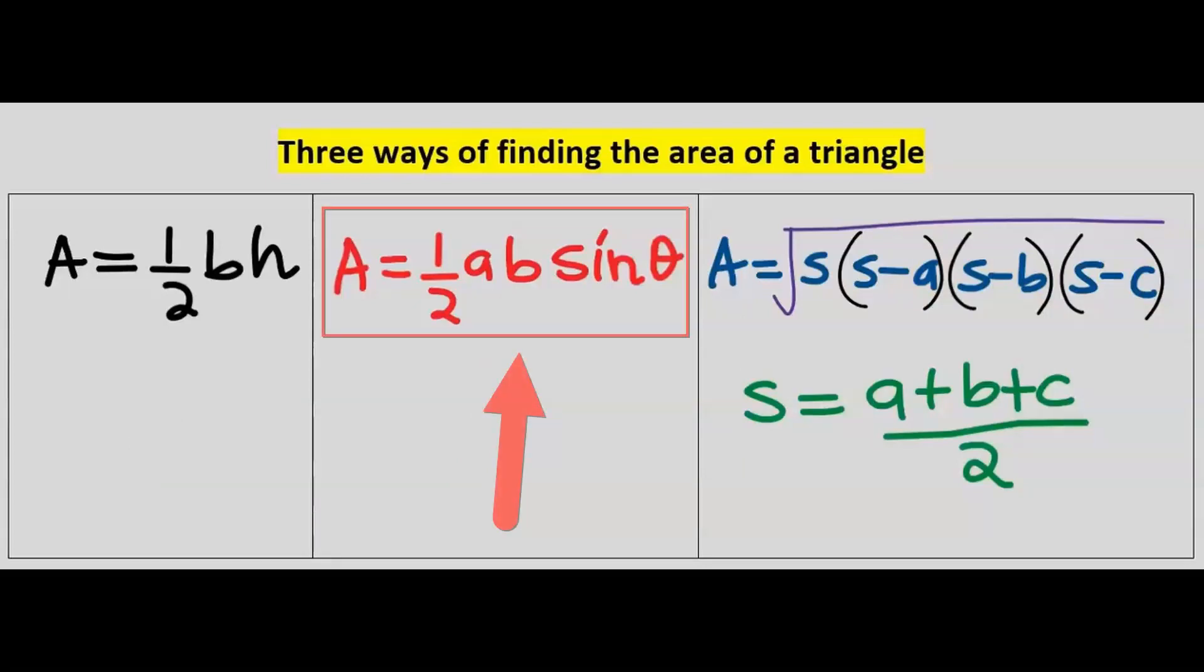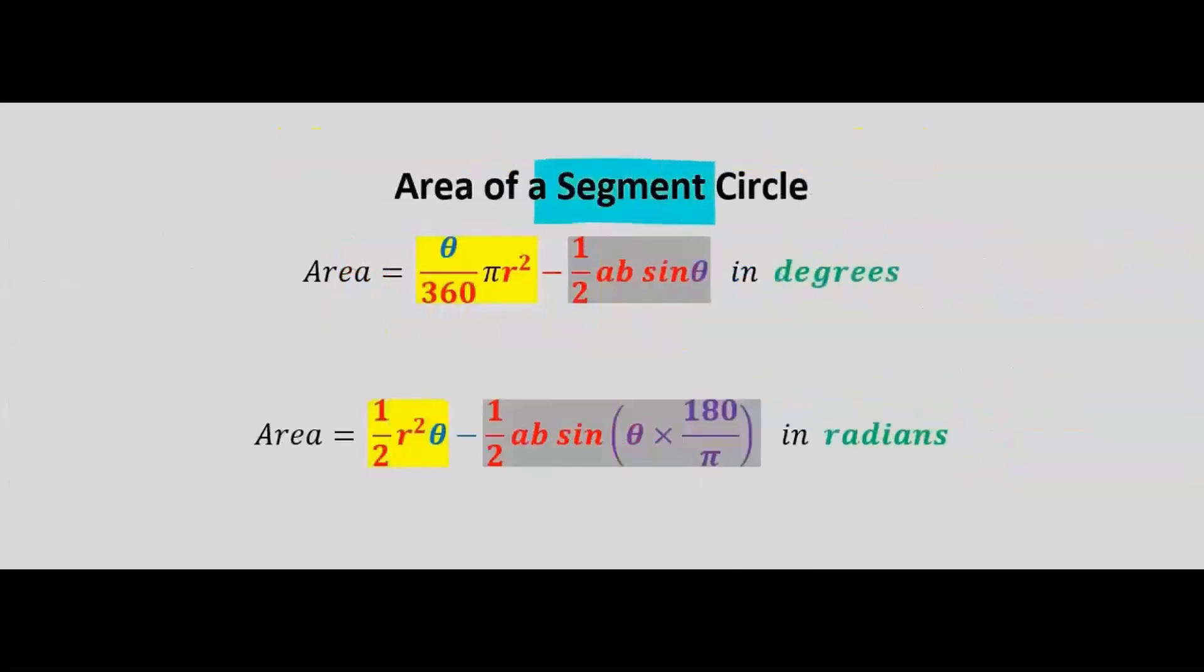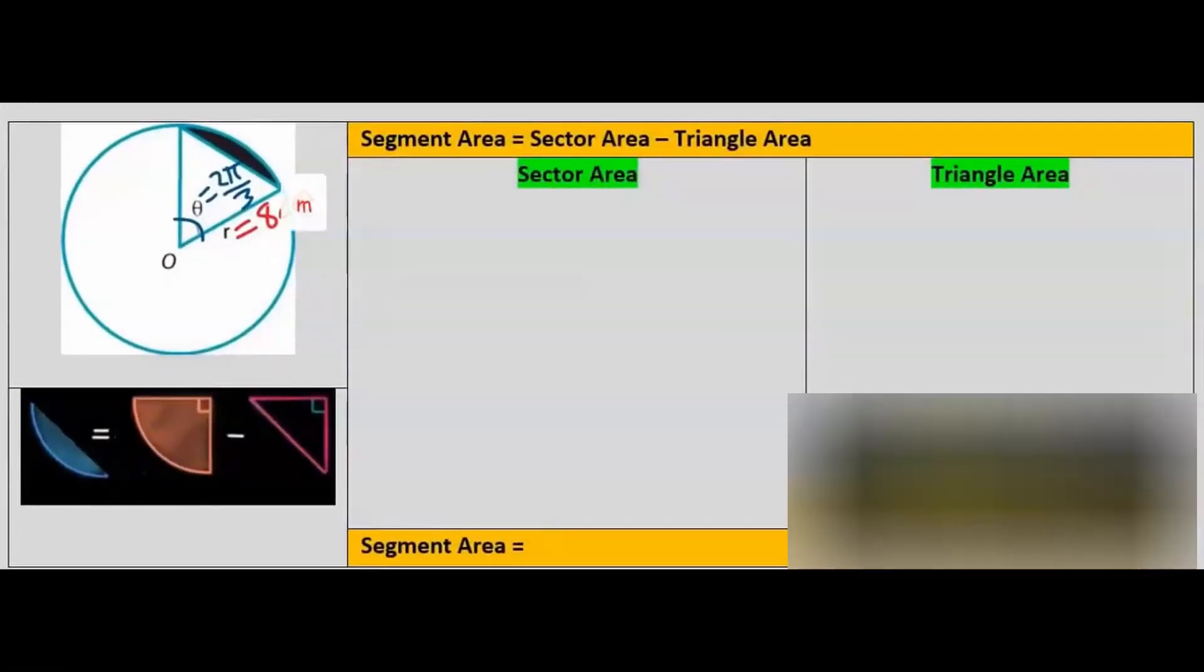Any of these can help you find the area of a triangle, but in this video, because of the central angle, we are going to use this formula. To find the area of a segment, we use this formula when the central angle is in degrees and this formula when the central angle is in radians.